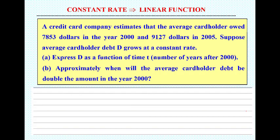So students, the question: A credit card company estimates that the average cardholder owed 7853 dollars in the year 2000 and 9127 dollars in 2005. Suppose the average cardholder debt D grows at a constant rate. Find the debt as a function of time, and approximately when will the debt be double the amount in the year 2000? So many people have credit card, they have one debt. Five years later they have more debt. They see the debt increases. Is that danger? When the debt doubles the amount, it will be danger. When does it happen? Help them to find.